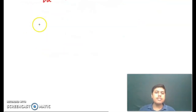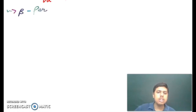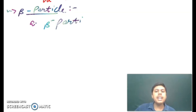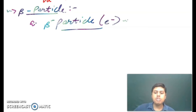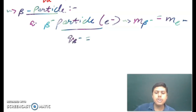After the alpha particle, we have the beta particle, which is divided into two: beta negative and beta positive. The beta negative particle is also called an electron. The mass of the beta negative particle is equivalent to the mass of an electron, and the charge of the beta negative particle is also equivalent to the charge of an electron.